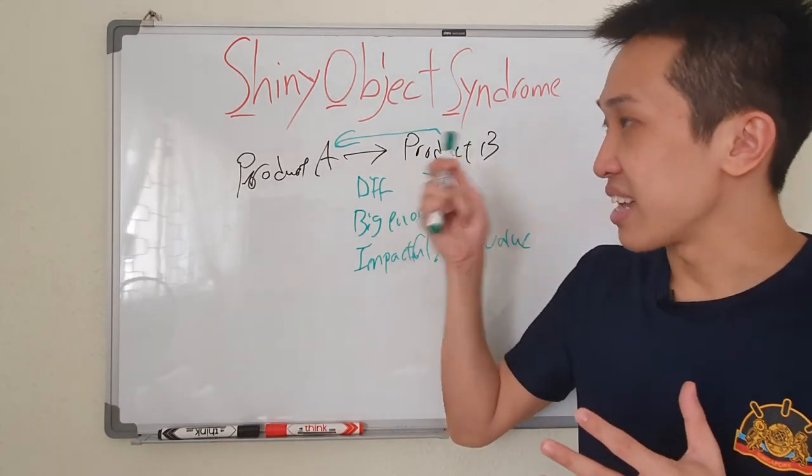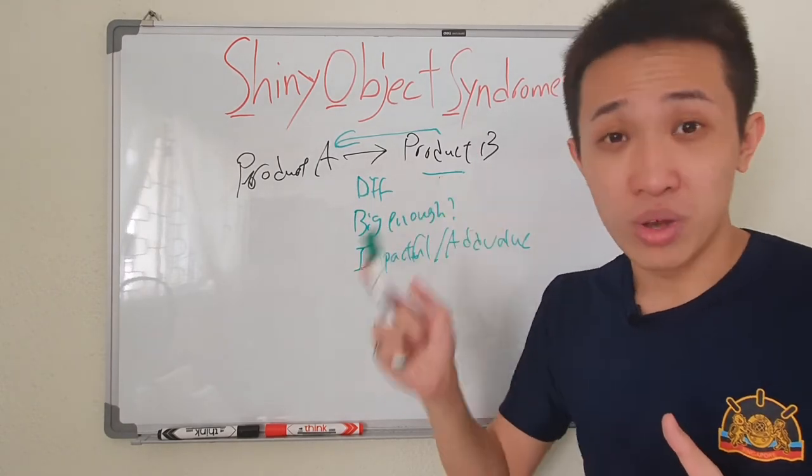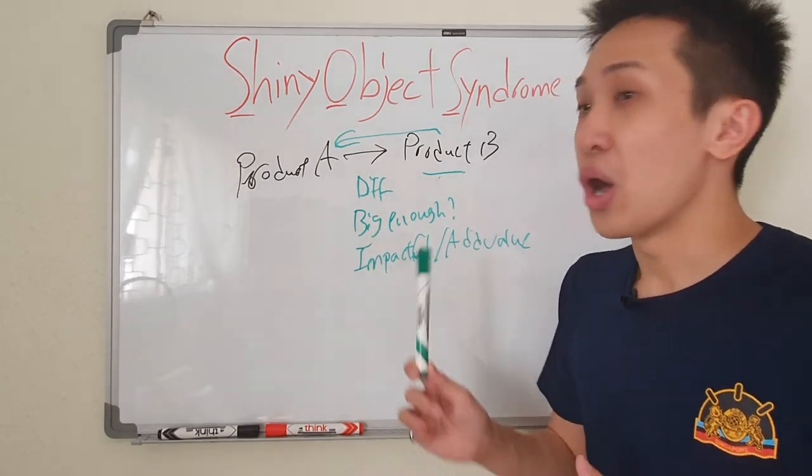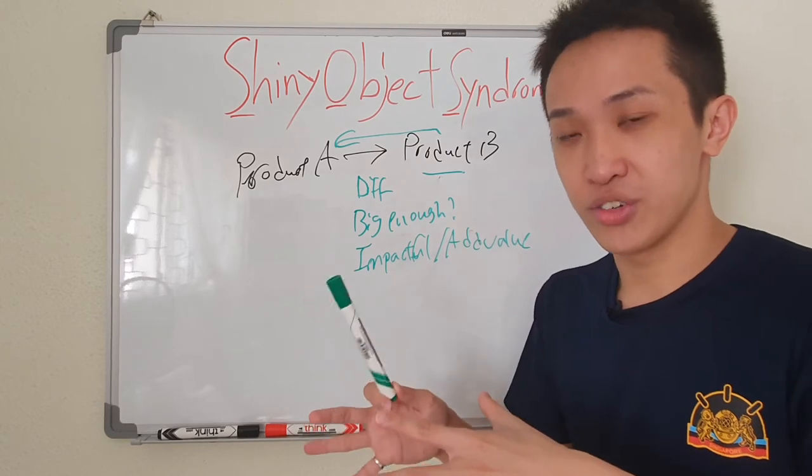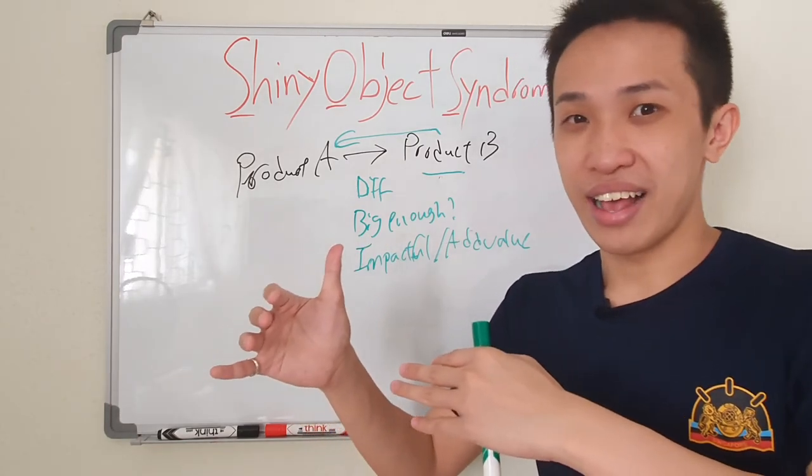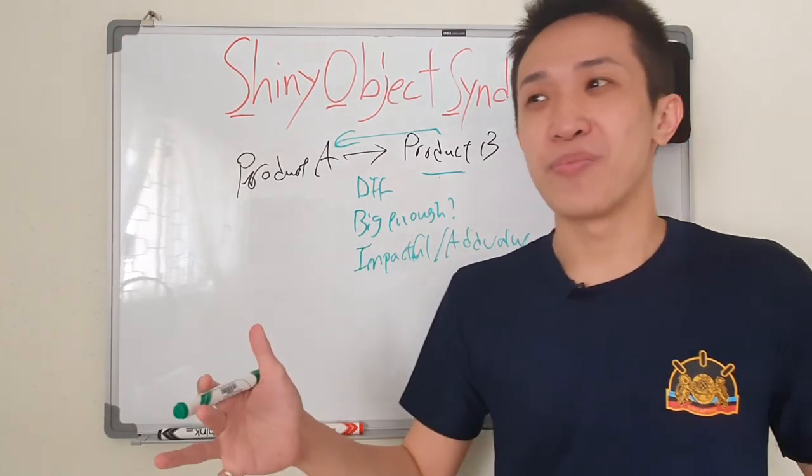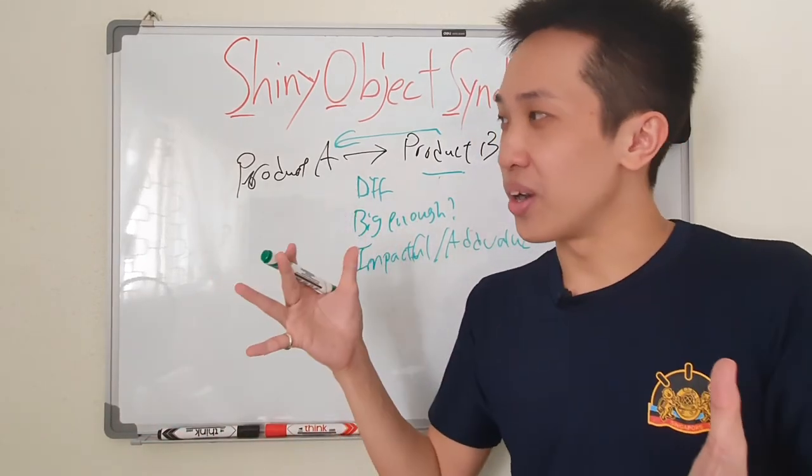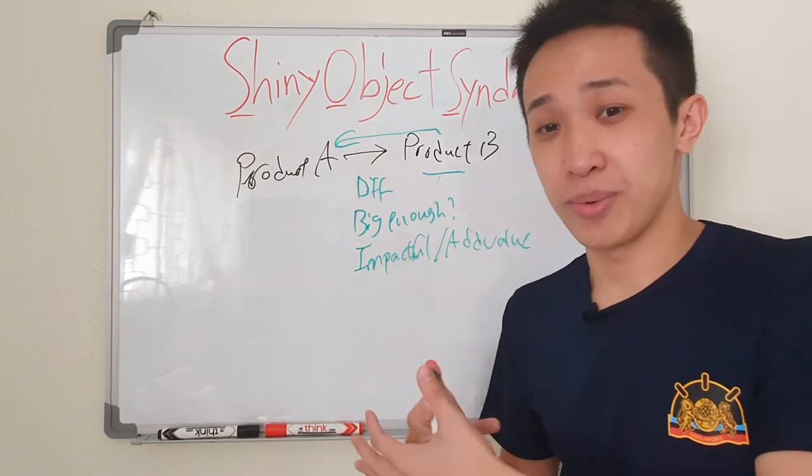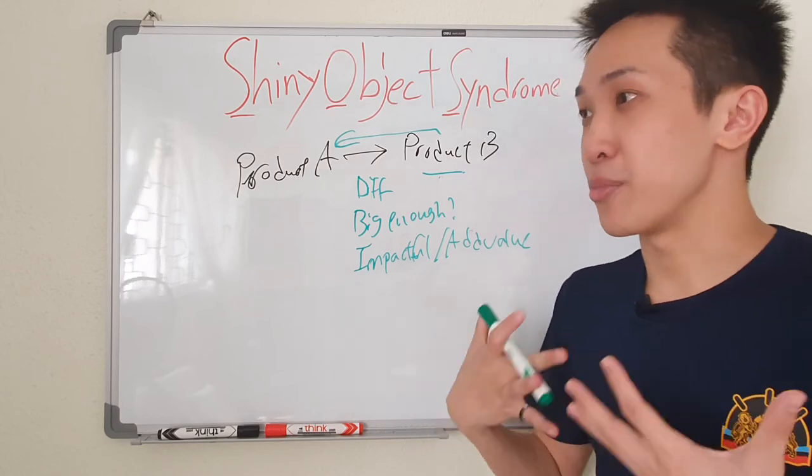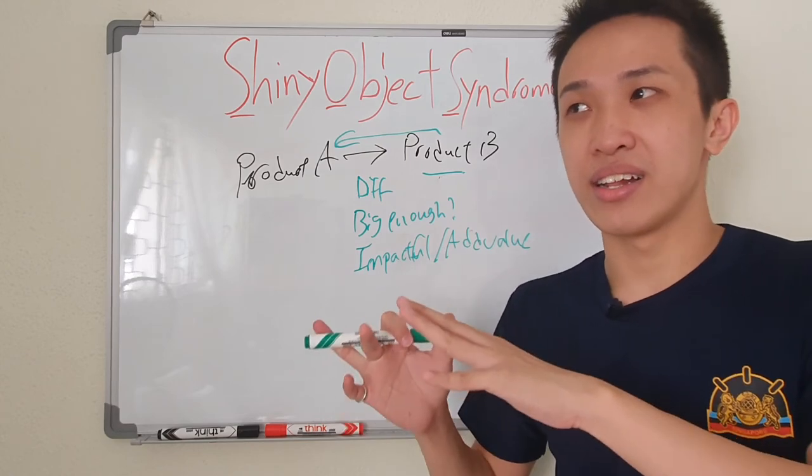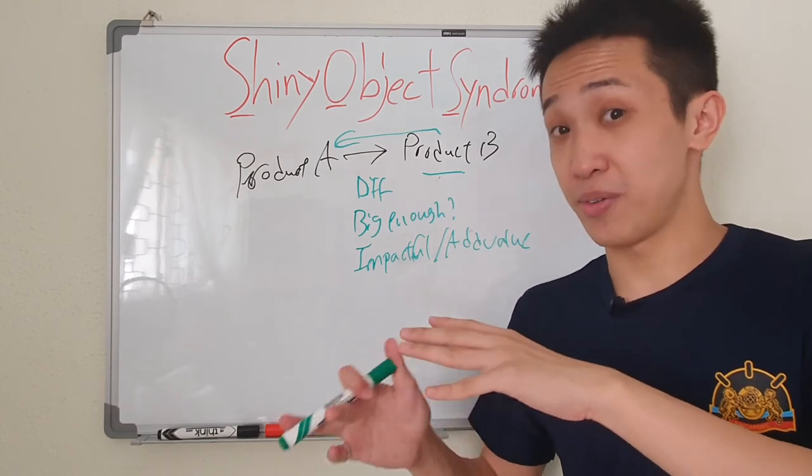So get away from the shiny object syndrome, it is not worth it. But if you guys can identify what is shiny object syndrome and you know how to counter it, you will be in a very good place to position yourself to move forward steadily and without distractions. I hope you guys really, truly understand how bad it is to fall under shiny object syndrome and how you can get out of it. It's really one of the key things that my students have faced and suffered from before.